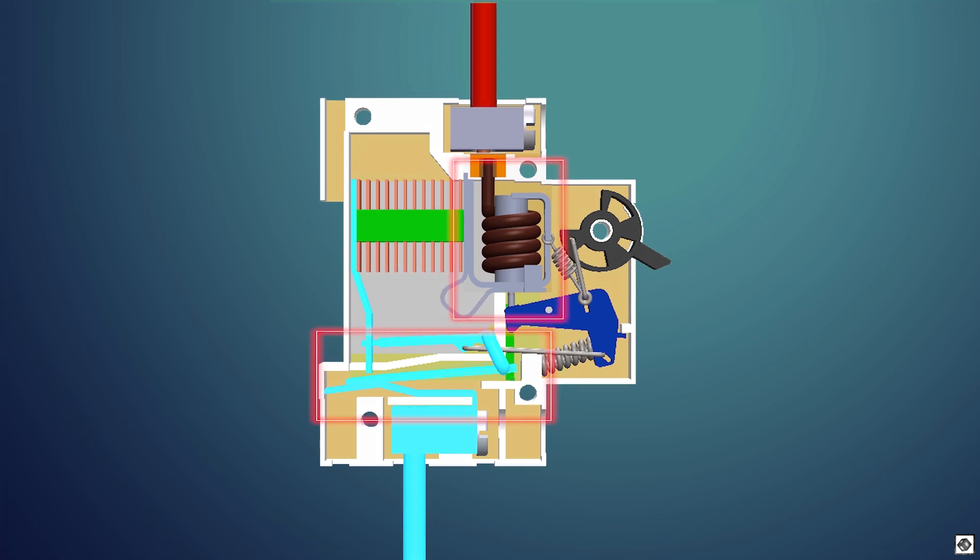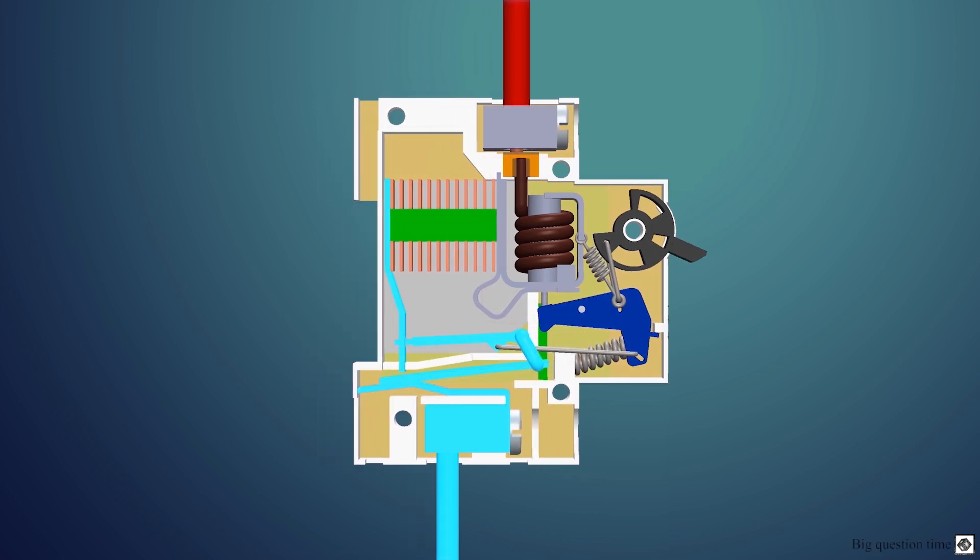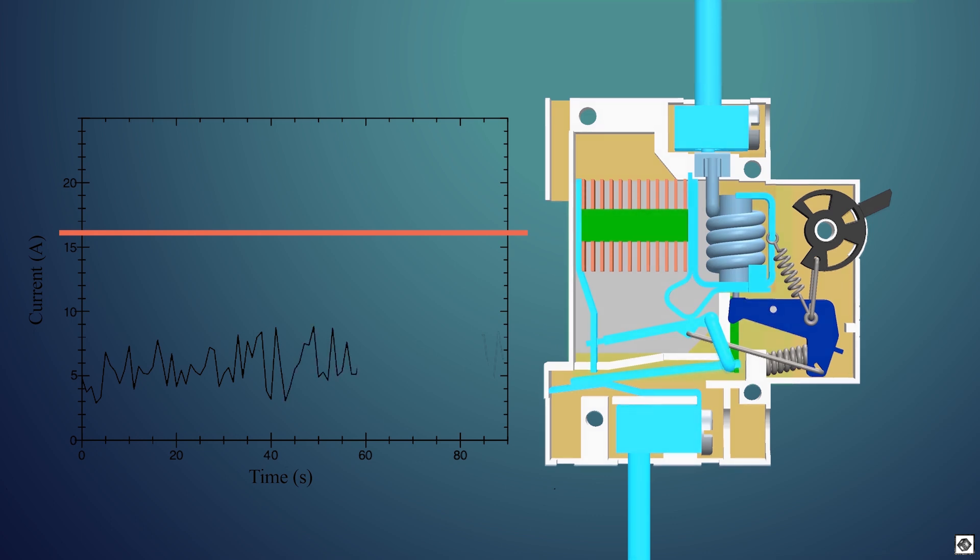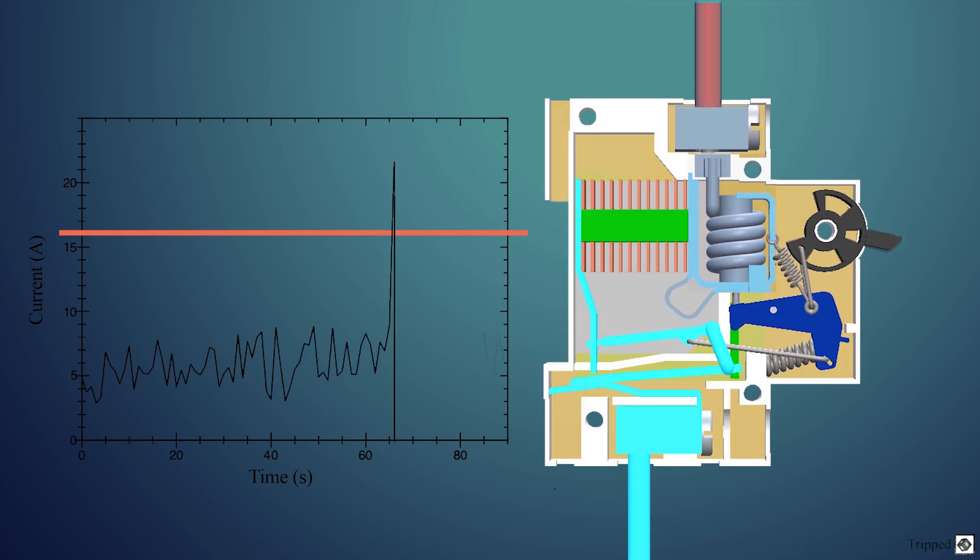But why do we need two mechanisms to break the circuit? Let's see for the first case, that is, on overload where the circuit breaker trips at 16 amps using the solenoid as the trigger. Now as the current increases beyond 16 amps, just for a small amount of time, the solenoid will push the pin and the MCB will trip.